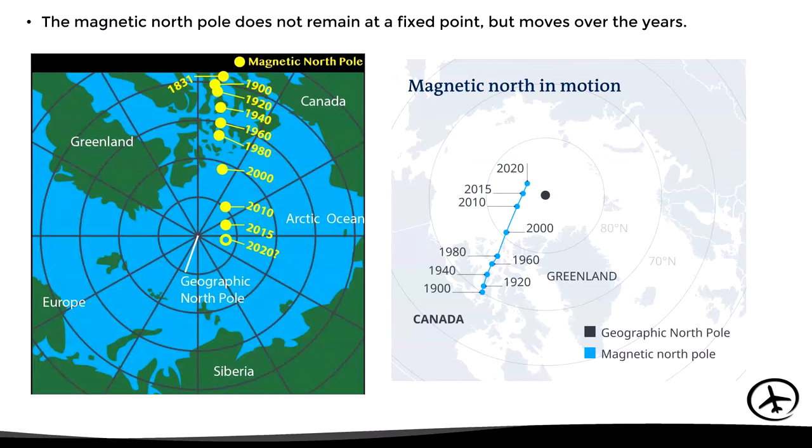Another characteristic of magnetic north is that it does not remain static in the same position but moves over the years. In these images we can see how the magnetic north pole has been moving since the 1900s, from the northern part of Canada towards Siberia.